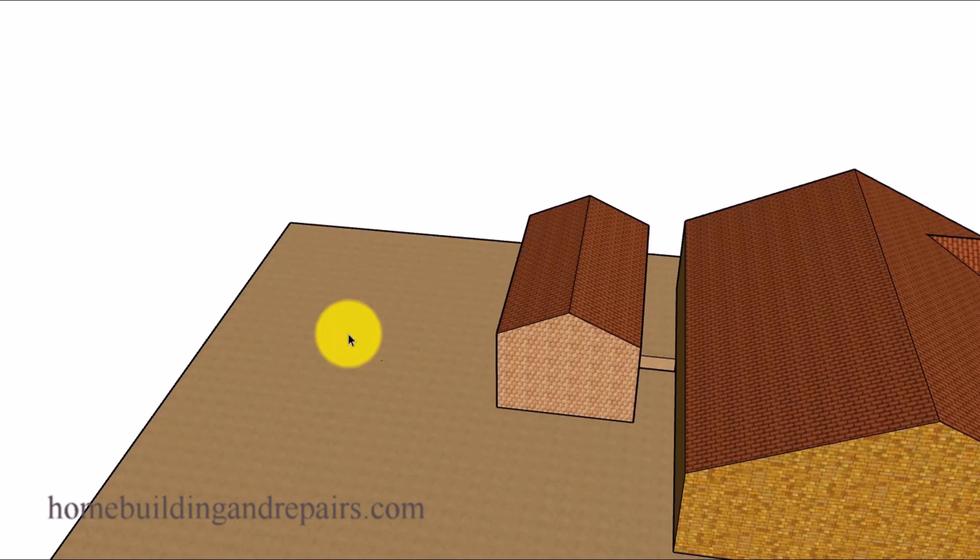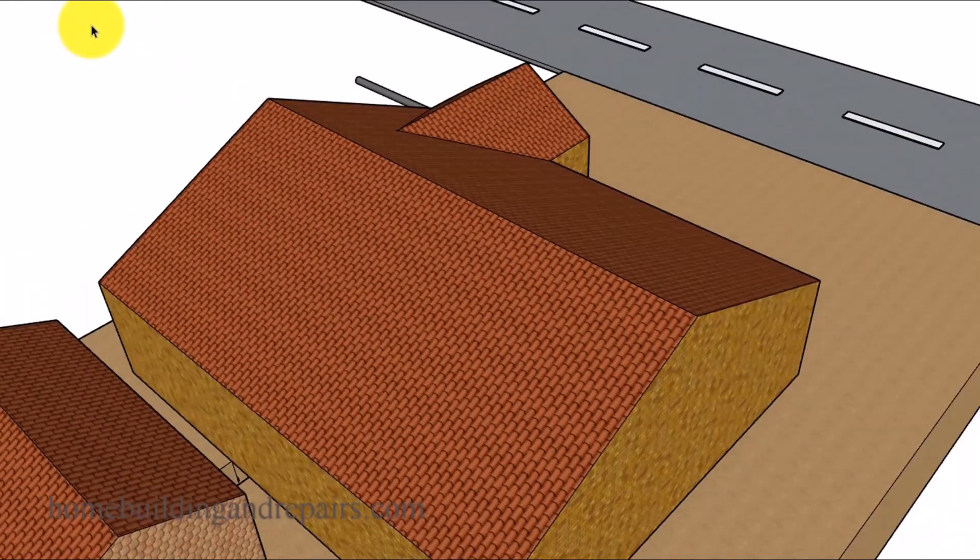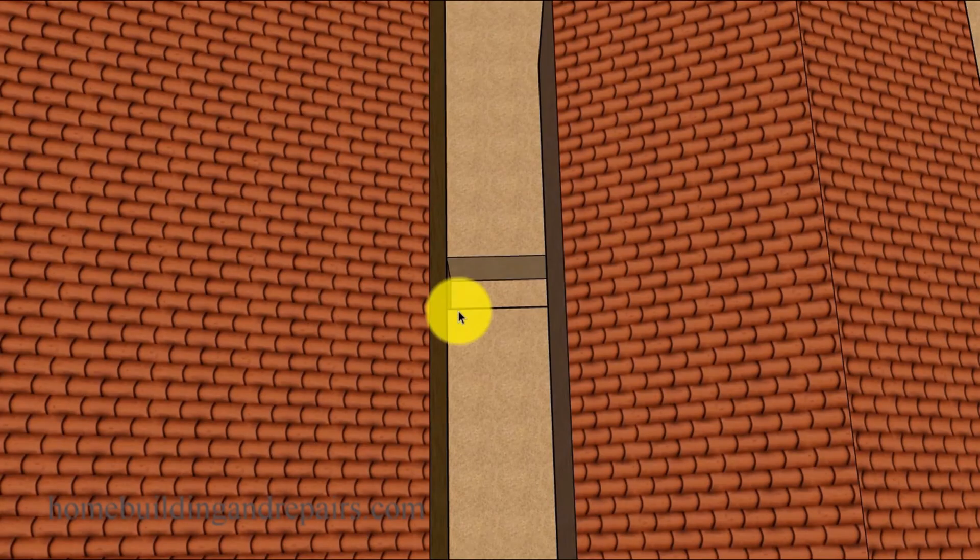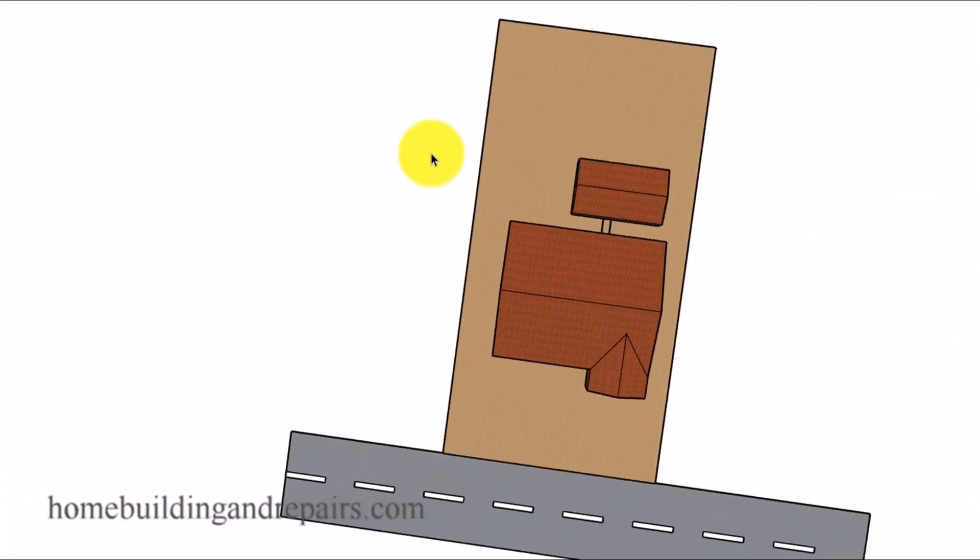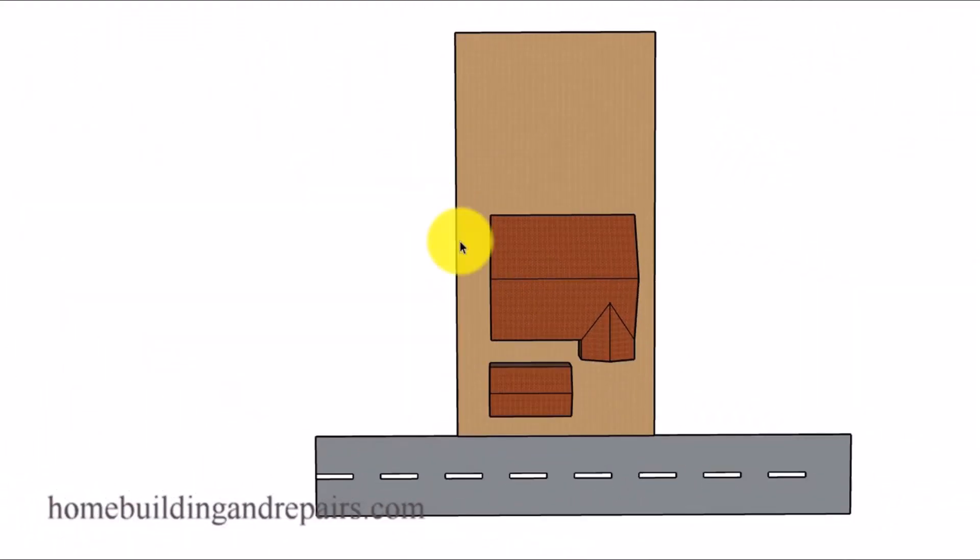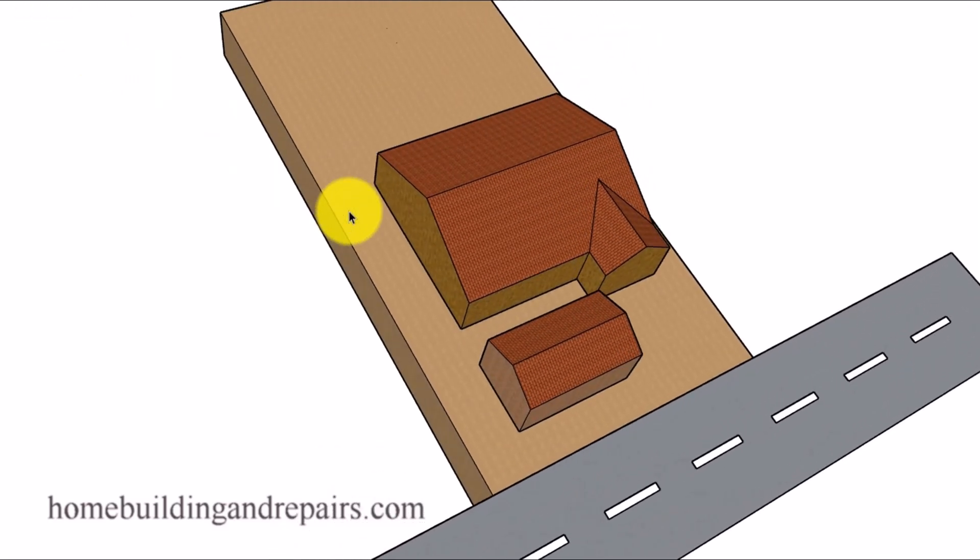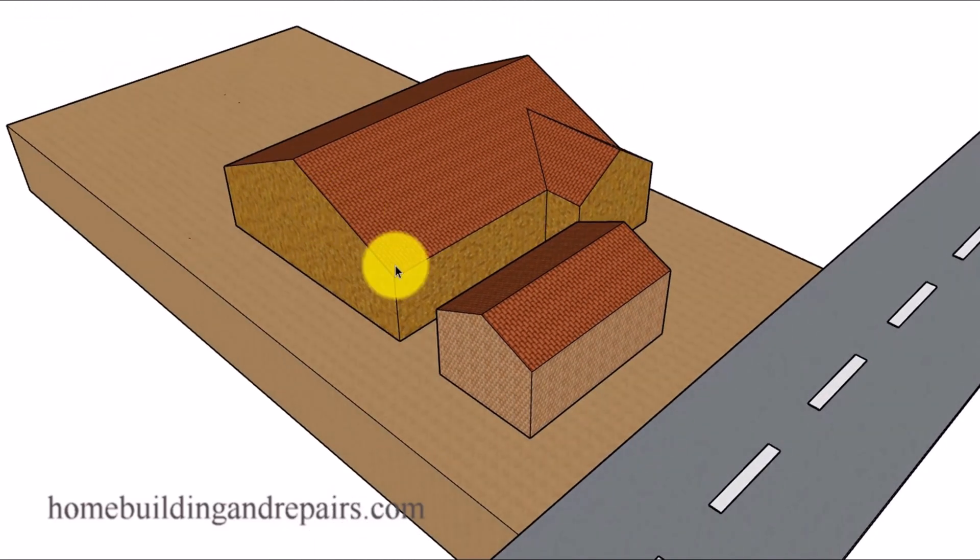Another idea, and this might not be feasible, would be to move the building a little closer to the house. Maybe everything would work out a little better. But of course you would have to make sure that your planning department would approve something like that. And even though something like this might not be feasible, you could always put it in the front of your house.